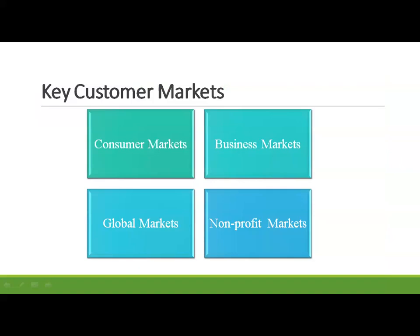Next we will learn the key consumer markets. A market is defined as the sum total of all the buyers and sellers in an area or region under consideration. The area may be anywhere — countries, regions, states, or cities. The value, cost, and price of items traded are as per the forces of supply and demand. If demand is more and supply is less, prices will be high; if supply is more and demand is less, prices can drop. A market may be a physical entity or a virtual market, local or global.